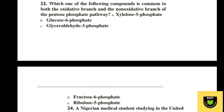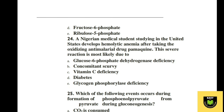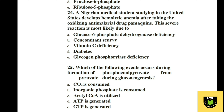Question 23. Which of the following compounds is common to both the oxidative branch and non-oxidative branch of the pentose phosphate pathway? A xylulose-5-phosphate, B glucose-6-phosphate, C glyceraldehyde-3-phosphate, D fructose-6-phosphate, E ribulose-5-phosphate. The correct option is E, ribulose-5-phosphate.